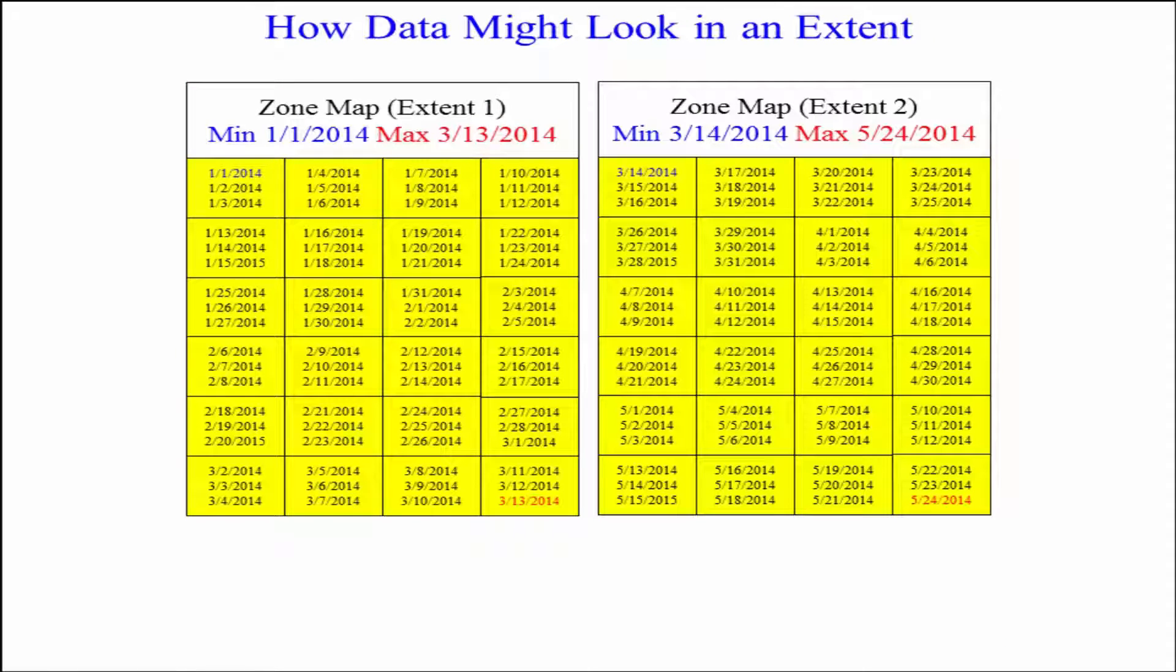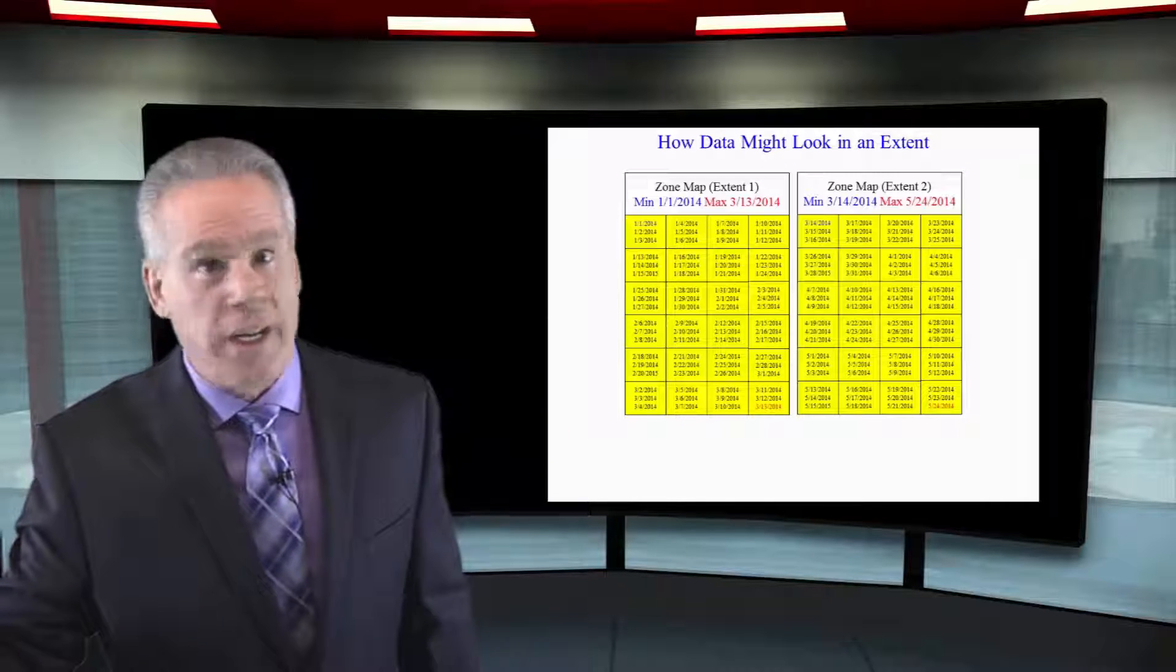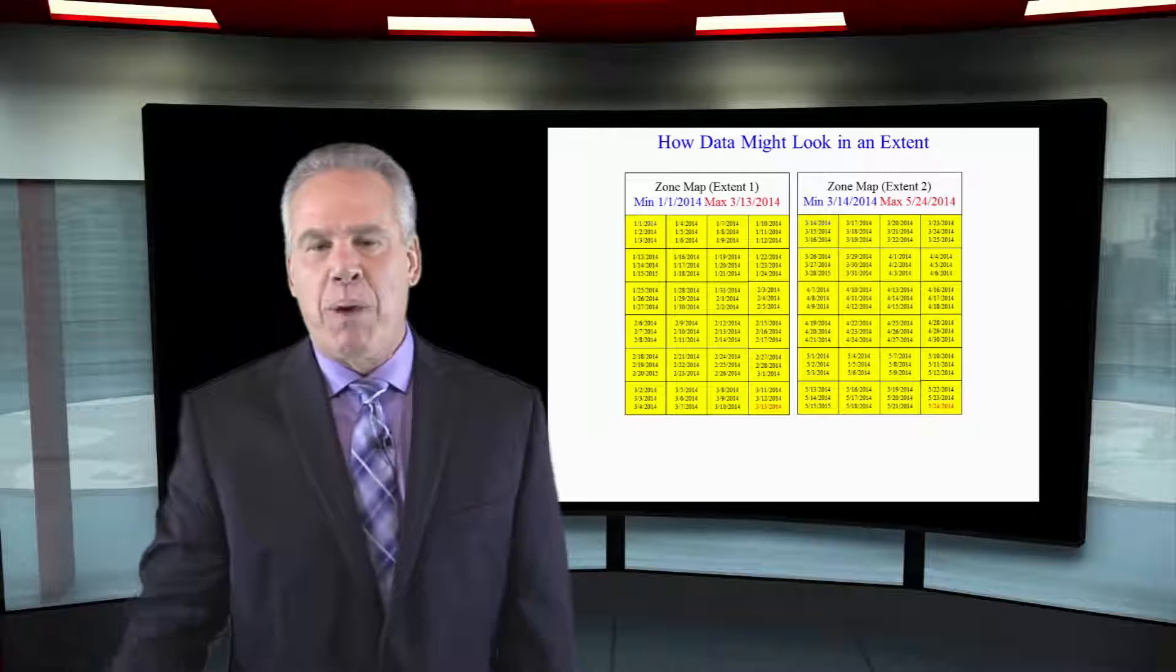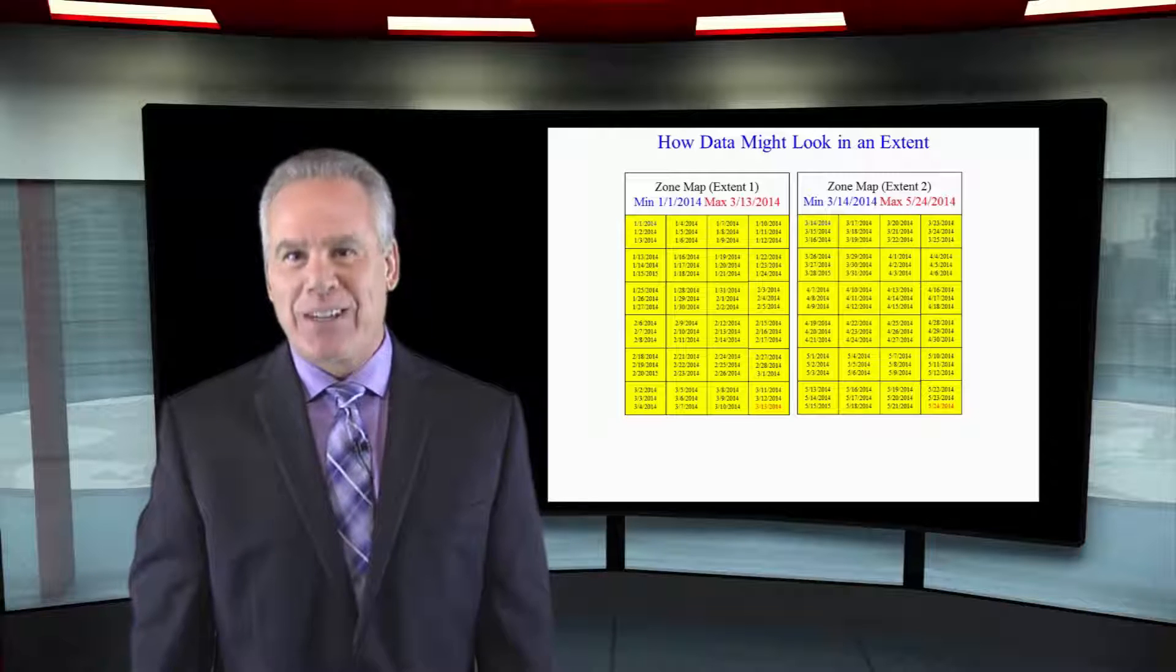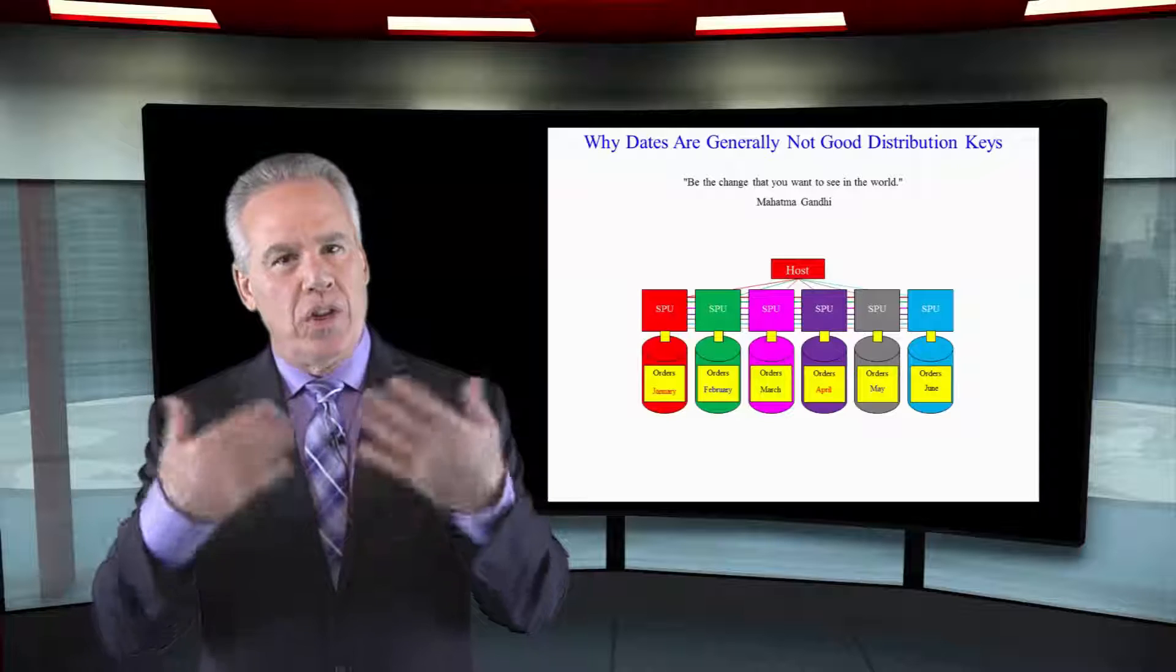The zone maps are going to reflect that. If we run a query that says, I want to select all of the orders that happened in February, I'm looking at the zone map. We're going to have to read extent one, but there's no sense in reading extent two. It couldn't possibly hold that data. It falls outside the range.